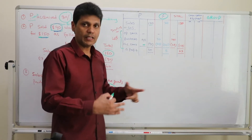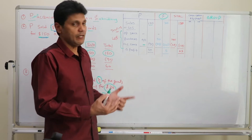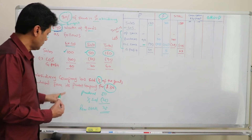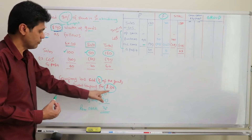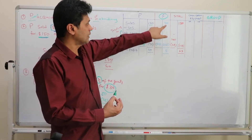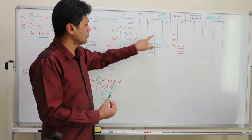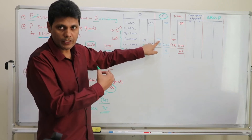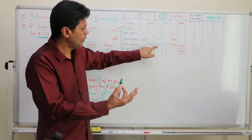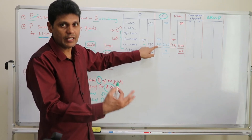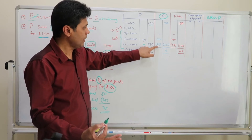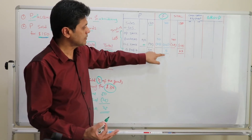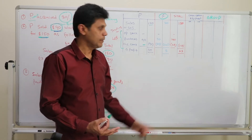When it comes to the subsidiary company in their separate financial statement, their sales will be $30 because they sold half of the goods for $30. There is no opening stock. Their purchases will be $50 because they bought from the parent company, of which $25 worth of goods is still lying in the subsidiary company's books. So their cost of sales will be $25, and the profit recognized by the subsidiary company will be $5.